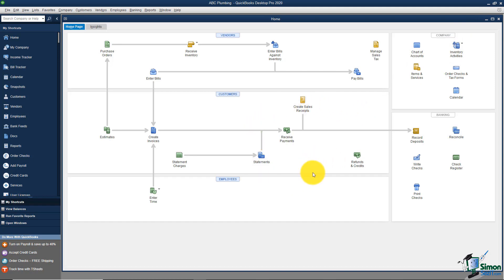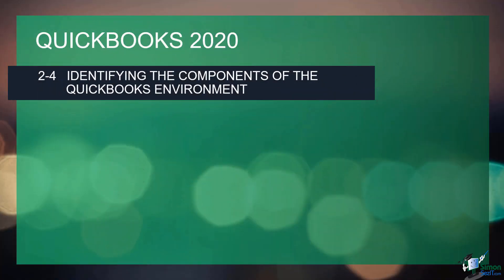Now let's jump to Section 4 and talk about identifying the components of the QuickBooks environment. We're currently in Module 2, called 'Getting Started.' In Section 4, I want to take a few moments to go through the screen itself, get you familiar with the terminology, and show you how you can change some things to work better for you. Let me flip over to QuickBooks and get started talking about the home screen.